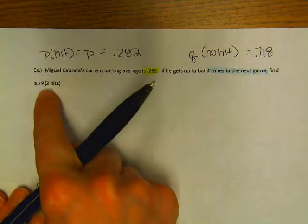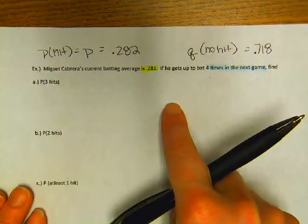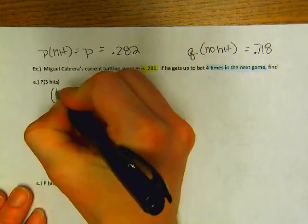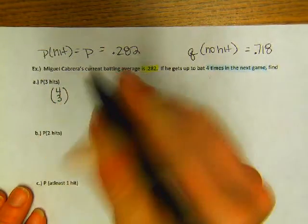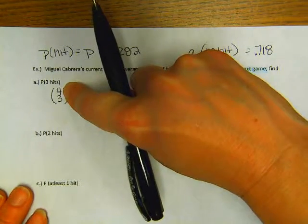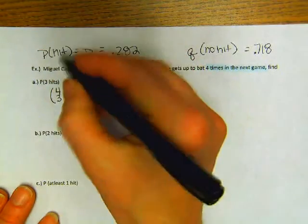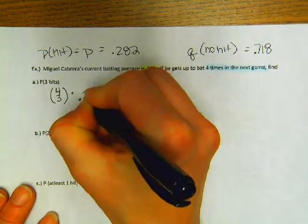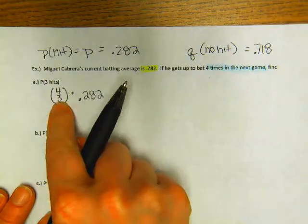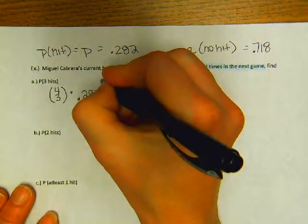We are gonna do 4C3. The four is because that's how many times he gets up to bat. I'm counting three successes. The probability of getting a hit is .282, and because I'm counting if he gets three of them, I'm gonna raise that to the third power.